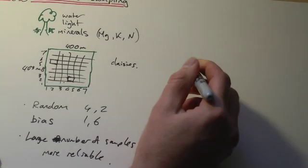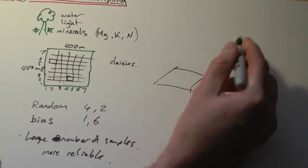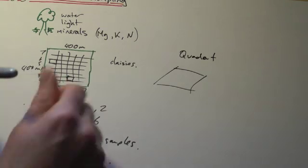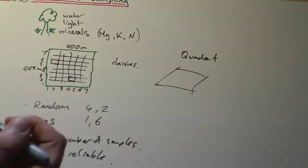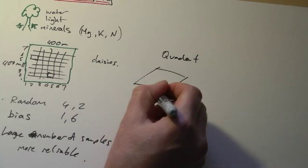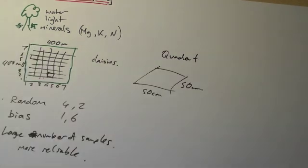How would you actually sample? You'd use something called a quadrat. And a quadrat is usually some kind of frame. It might be wire, it might be wood, it might be plastic.